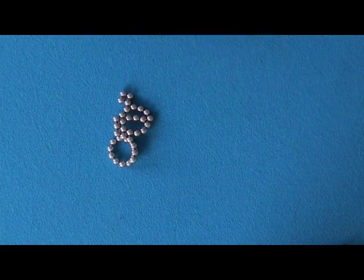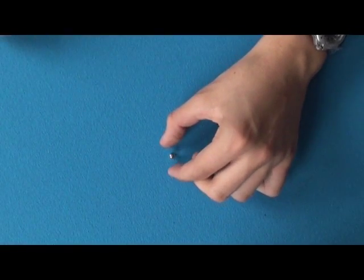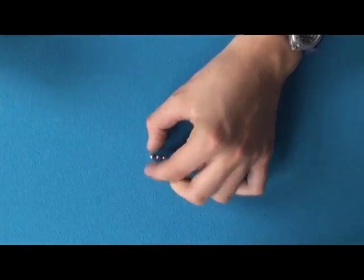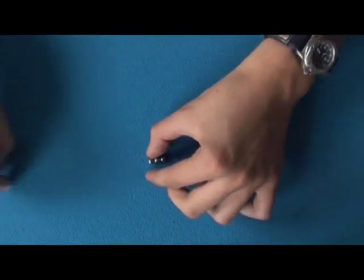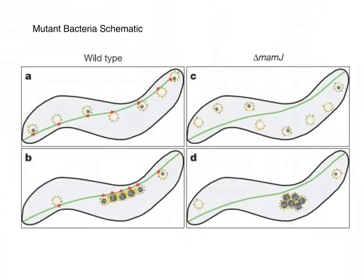To build a linear chain of magnetosomes and avoid collapsing into a ring or cluster, the bacteria have to exert some influence on the growth of these chains. The only way to prevent chain collapse is by physically holding the beads in the desired configuration.